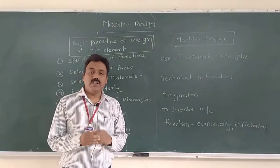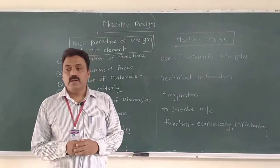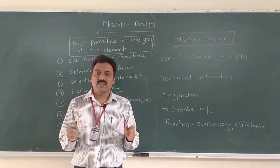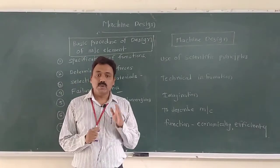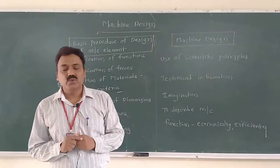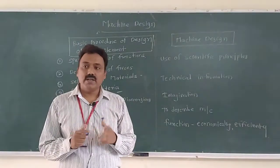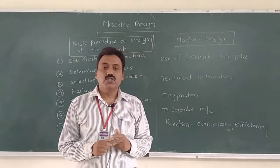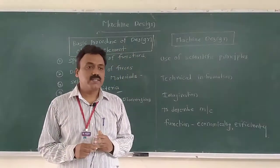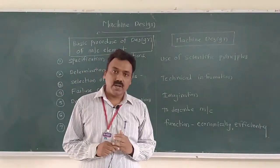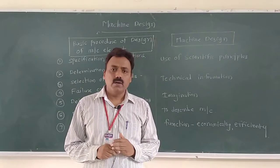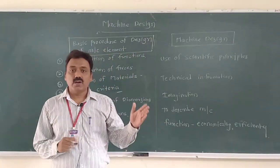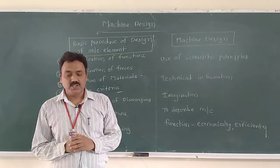A machine is a basic resource or a core resource of any manufacturing industry. Machine adds value to the product. All industries — automobile, oil industry, textile industry, sugar industry, chemical industry, petrochemical industry — all industries use machineries which convert raw material into finished product.